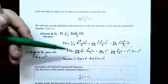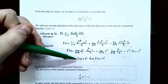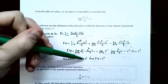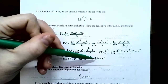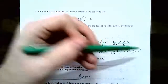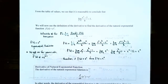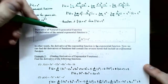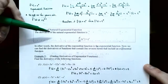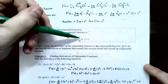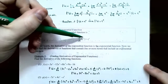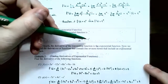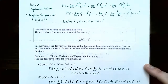This work shows that if your function is the natural exponential function, f of x equals e to the x, the derivative f prime of x is e to the x. In other words, the derivative of the natural exponential function is itself. The derivative with respect to x of e to the x is e to the x.